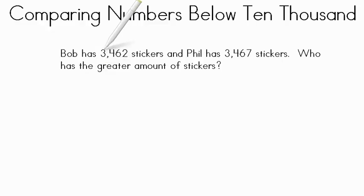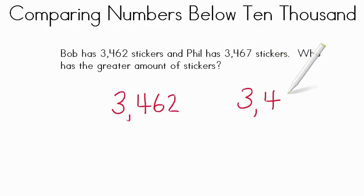To review, let's solve this word problem. Bob has 3,462 stickers and Phil has 3,467 stickers. Who has the greater amount of stickers? So let's compare our two numbers. We have 3,462 and 3,467. Let's compare those numbers. Well 3,000, a 3,000 here and a 3,000 here.